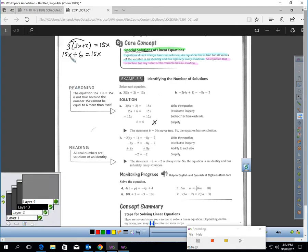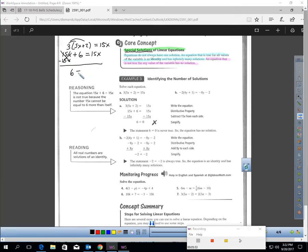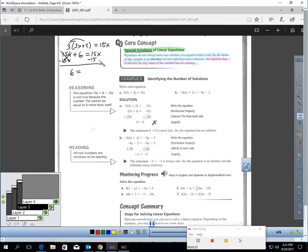Let's get all the variables on one side. So I'll take away 15x here, which will cancel that out. 6 on the left. And I'll take away 15x here, and look what happens. All the variables disappear, and I get a statement. Let's look at the statement. Does that make sense? Does 6 equal 0? And it doesn't make sense.